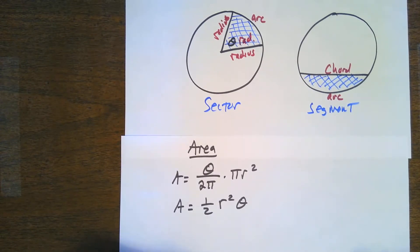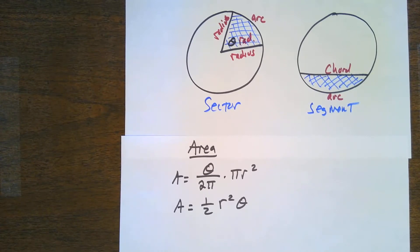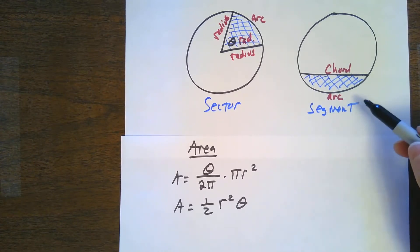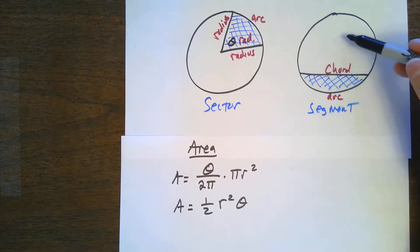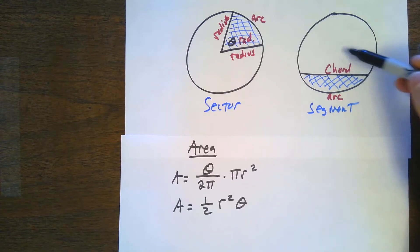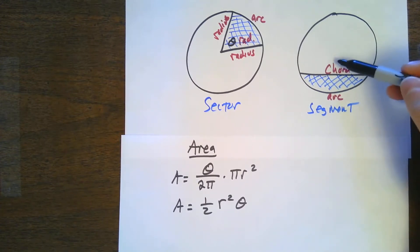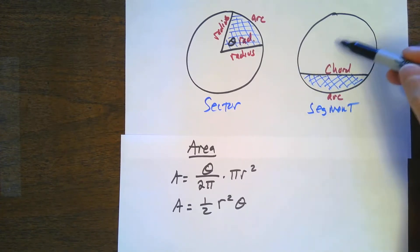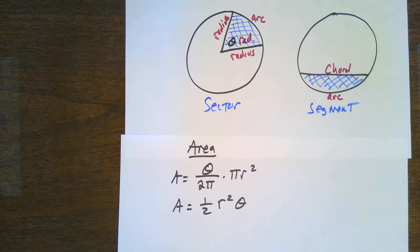So there's the area of a sector. I don't want to talk about the area of a segment yet — we'll come back to that a little bit later. Basically, the area of the segment is going to be the area of the sector minus the isosceles triangle inside it. We'll look at an example of that later. Right now I really want to focus just on the area of a sector of a circle.